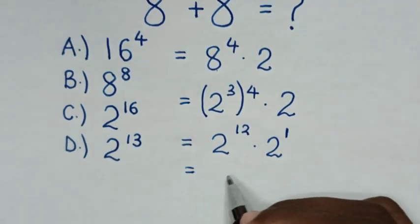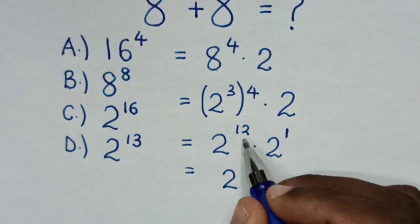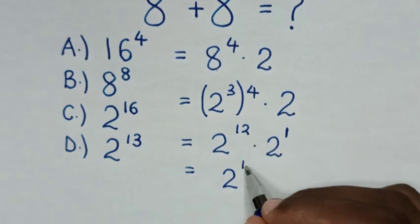Then, it will be equal to 2^(12 plus 1) is 2^13.